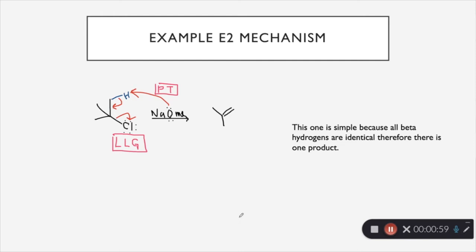This is a super simple example because all of these methyls have three beta-hydrogens that we can choose from, and it doesn't matter which one you choose because they will all bring about the same product.